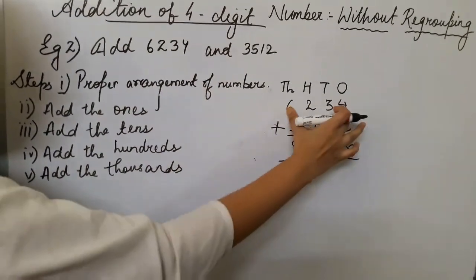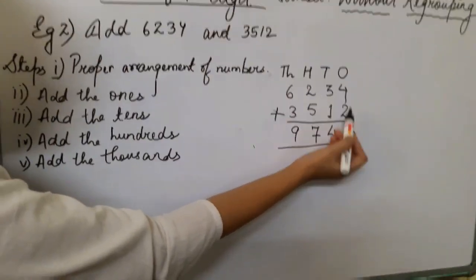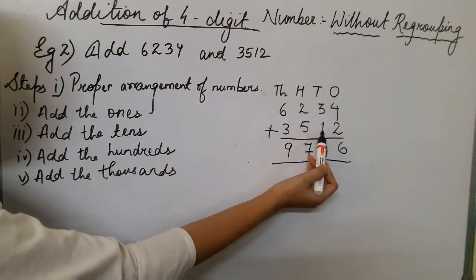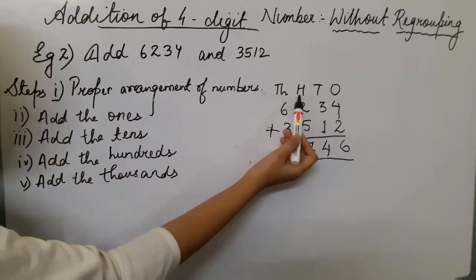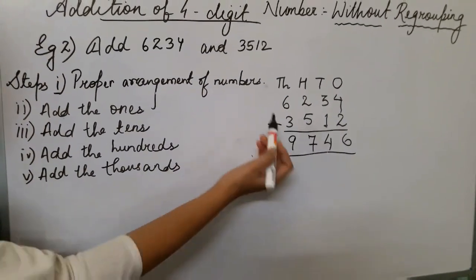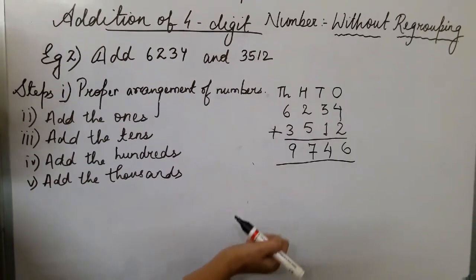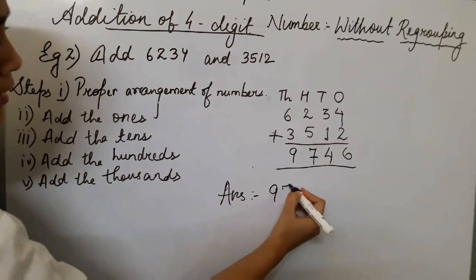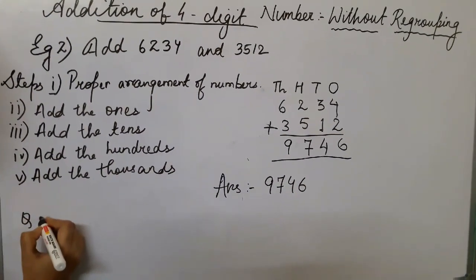To summarize the 5 steps: first, proper arrangement of numbers; then add the ones — 4 ones plus 2 ones is 6 ones; add the tens — 3 tens plus 1 ten is 4 tens; add the hundreds — 200 plus 500 is 700; and add the thousands — 6,000 plus 3,000 is 9,000. So the final answer is 9,746.